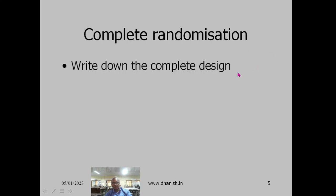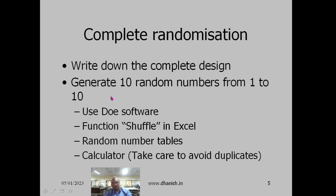First, write down the complete design, then allot 10 random numbers from 1 to 10 in the run order column. You can use DOE software like Design Expert, Minitab, or R, or if you are using Excel, loading the shuffle add-in allows you to generate random numbers using shuffle. You can also use random number tables or the random number function on your calculator.